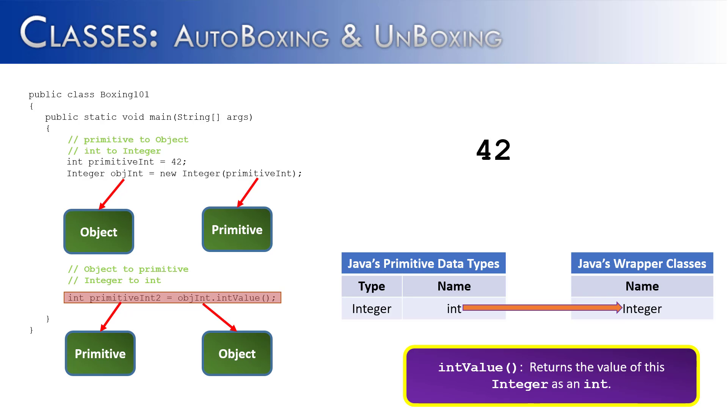So it's going to take that object and strip off the wrapper class around it and just leave the primitive value. And so this works perfectly. Now primitive int 2 is assigned to 42. We have moved from an integer object into a primitive int.